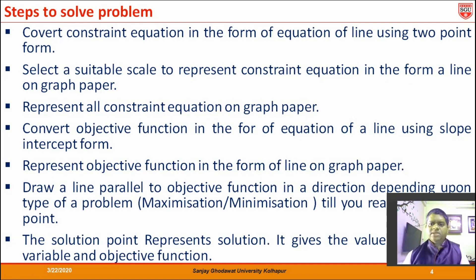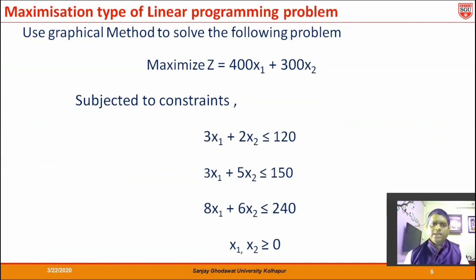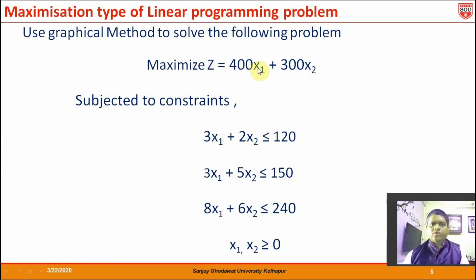This graphical method will not only give the value of the objective function, but also gives the value of the decision variables. Let us try to understand with this simple maximization problem. The question is: maximize Z = 400x₁ + 300x₂, and there are three constraint equations given in the problem.